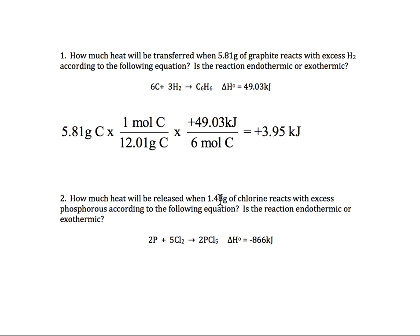Second one is the same idea. How much heat is released with 1.48 grams of chlorine and we have excess of the phosphorus? Look at our amount here, it's negative 866 kilojoules. That's for 5 moles of the chlorine.